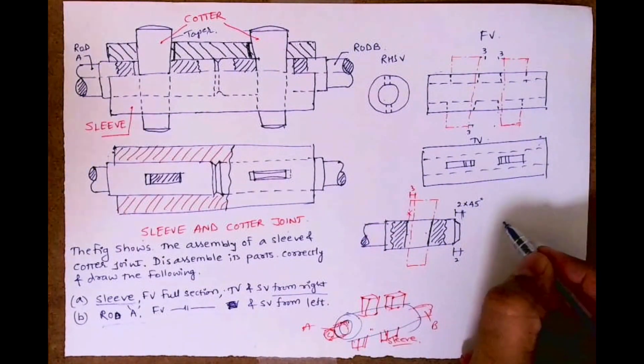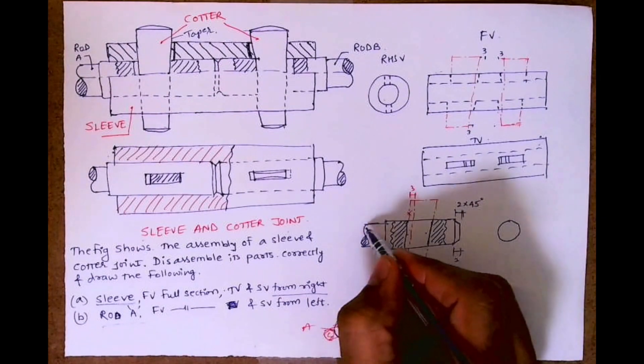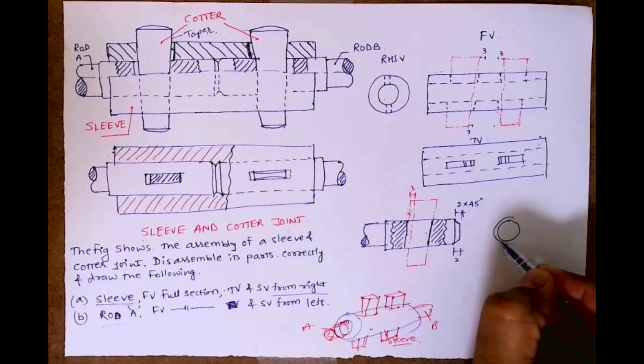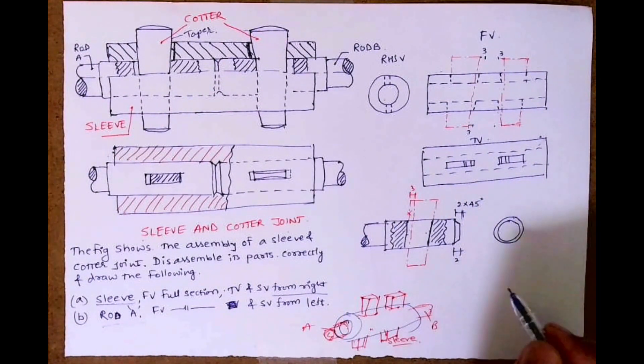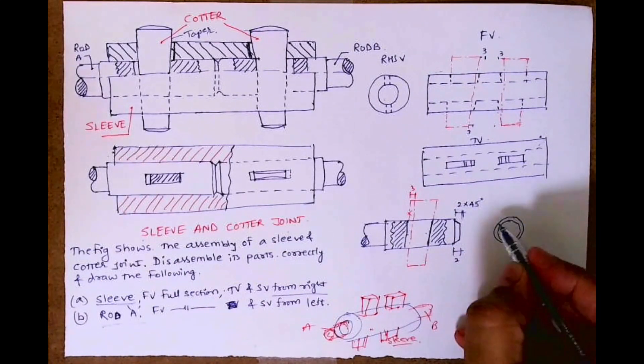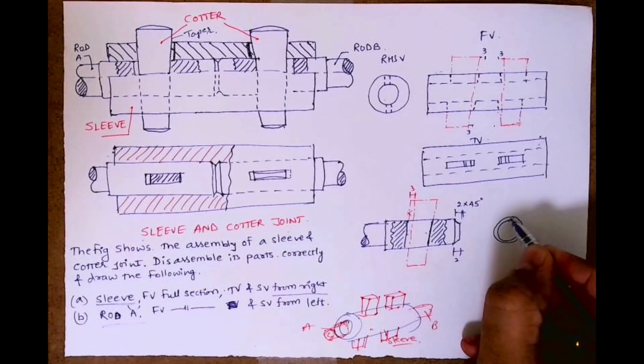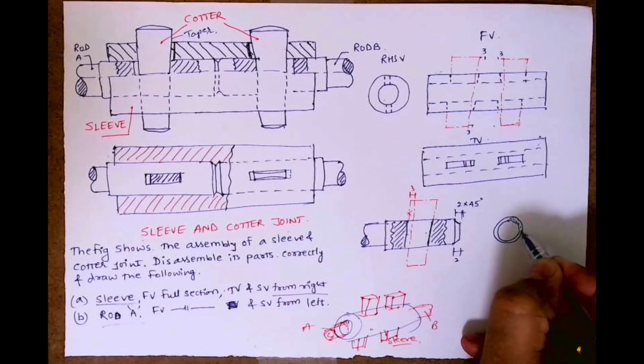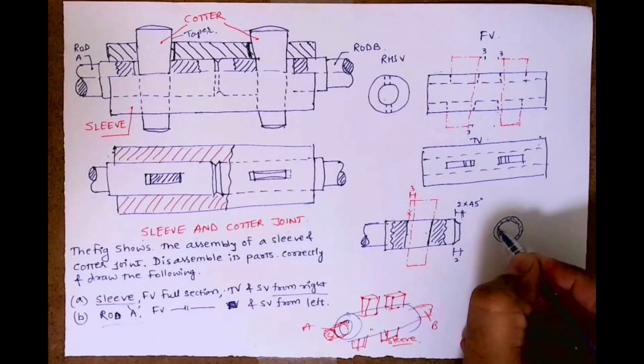Inside we will have two circles. And you have one dotted circle also for that chamfering, that 2 into 45. Just keep that in mind.